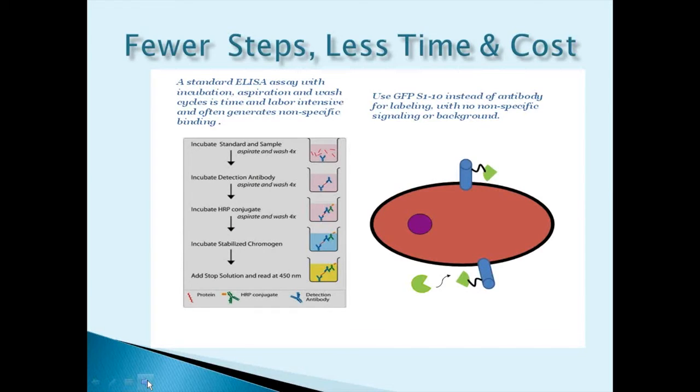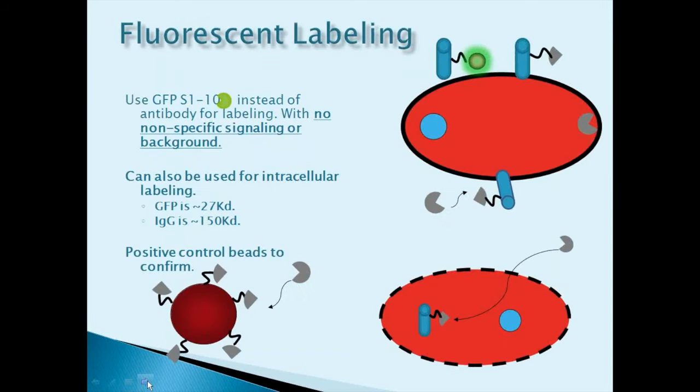Fragment complementation occurs within minutes, and the interaction saturates in a matter of hours. The tag offers the same advantages as radiometric assay without the hazards and can be used on standard fluorescent analysis equipment used for either direct or immunofluorescent assay.